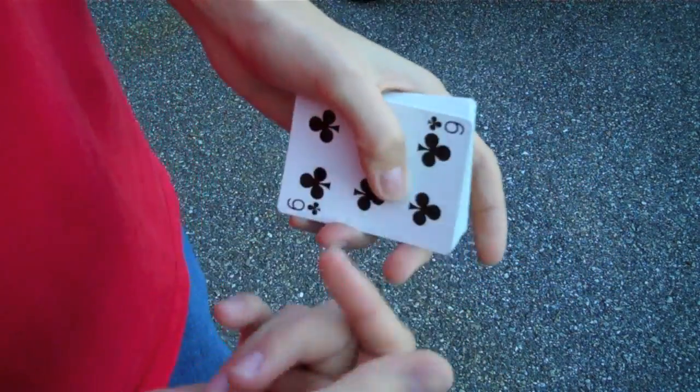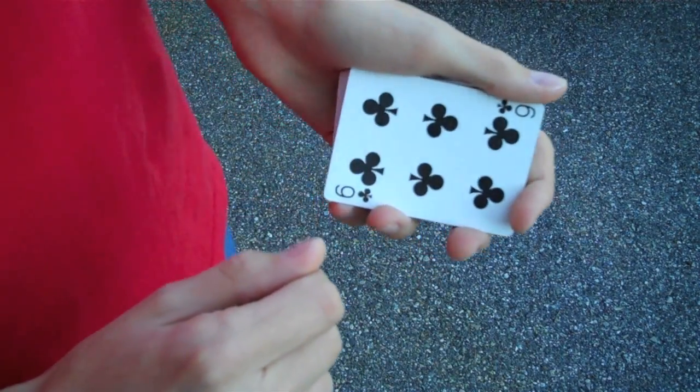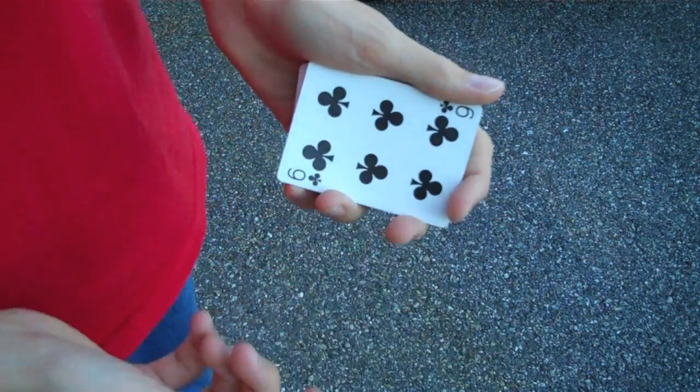Now since you're convinced it's in the center, your mind replaces the queen with the image of a different card. Let me show you what I see.